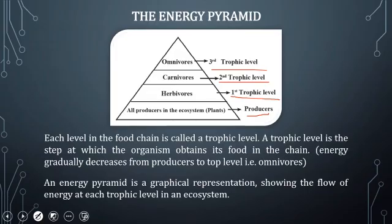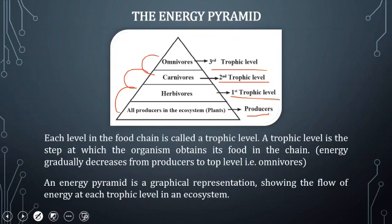Energy gradually decreases from producers to the top level. Herbivores have producers, carnivores have herbivores, and omnivores have carnivores as well as herbivores for their survival. So an energy pyramid is a graphical representation showing the flow of energy at each trophic level in an organism.